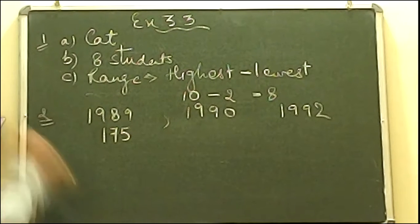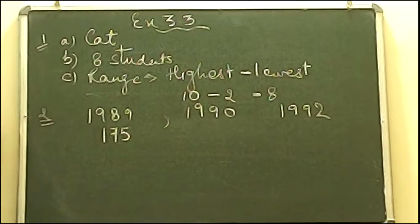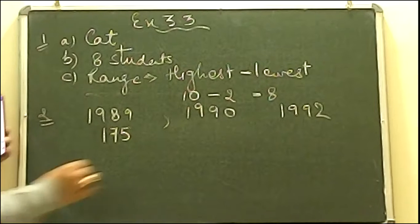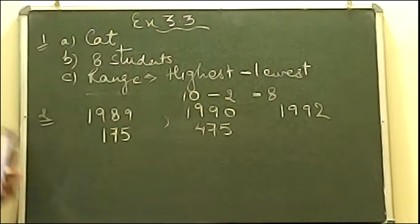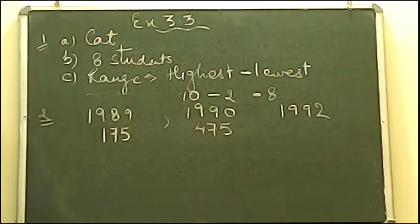For 1990, again you will find that you have some data above 450. It's not touching 500, so it means it will be 475. Move on to the next year, that is 1992. Tell me what is 1992?